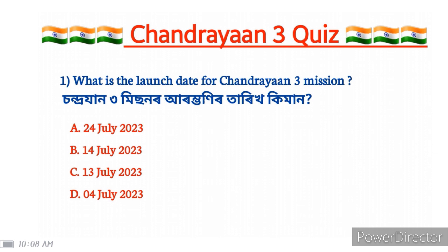What is the launch date for Chandrayaan-3 mission? The correct answer is option B: 14 July 2023.